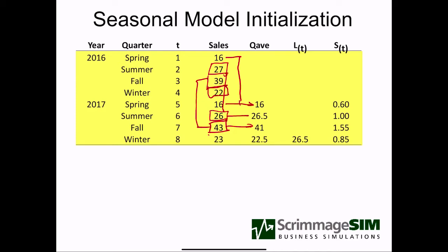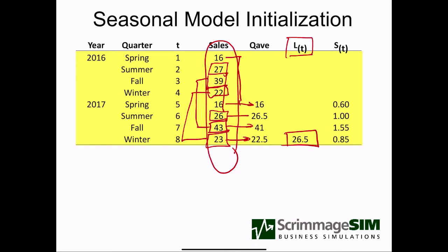Finally, winter — we had 22 and 23, averaged together that gives us 22.5. So we're merely averaging the same quarters together to get an average value for that quarter. Next, we need the overall average, which is also going to be our estimate for the level. We can sum up the entire set of sales and divide by eight, or take these quarterly averages and divide by four. Either way, we get the underlying sales level of 26.5. So over this two-year period, average sales were 26.5, but they were higher or lower based on the season.